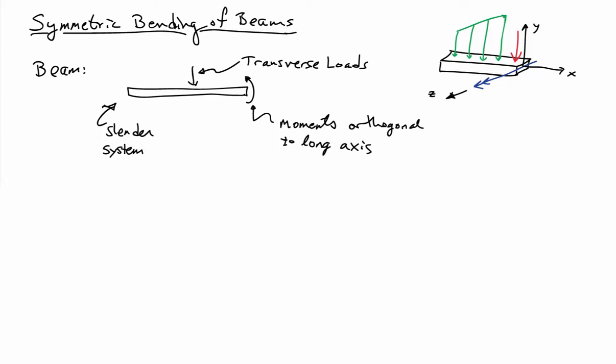Let's go ahead and use our kinematic observations to develop a theory of bending of what we call symmetric beams. Just as a quick reminder, a beam is a long, slender system subjected to transverse loads and moments that are orthogonal to the long axis. Drawn in 3D, I have a moment shown in blue, a force shown in red, or maybe a distributed load shown in green. All of these loads are orthogonal to the long axis, which is the x-axis in this case.